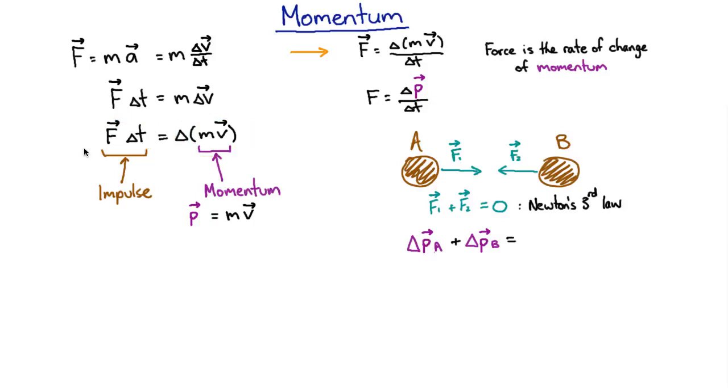And we know what that is because we know that the change in momentum is just given by the impulse. And so if we apply these forces for a certain amount of time, the change in momentum for particle A is just the force on that particle, which is F1, times that time, and the change in momentum of particle B is just the force acting on particle B, times that time. And of course we can factorize the time out of that.